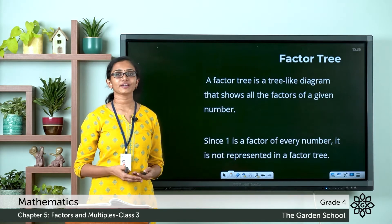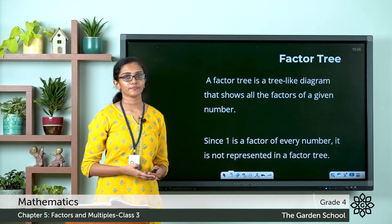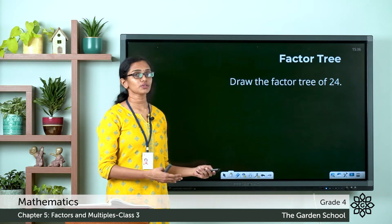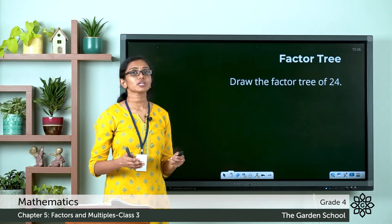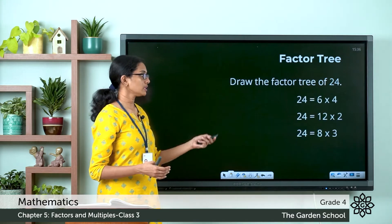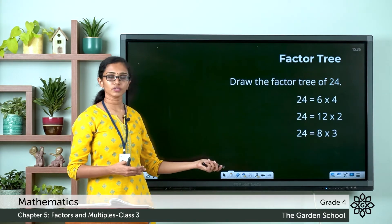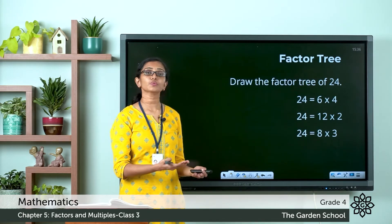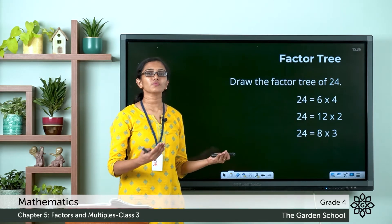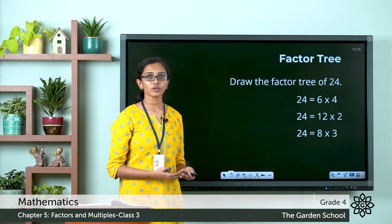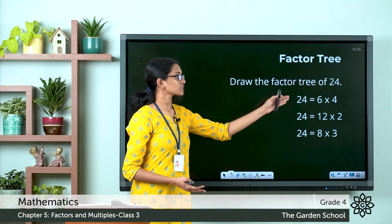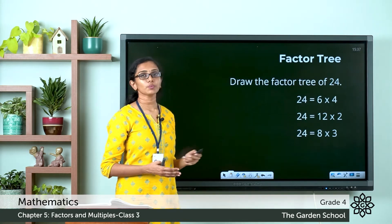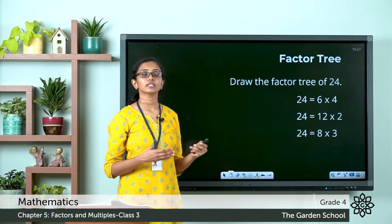Now let us learn how we can draw the factor tree of a given number. Draw the factor tree of 24. To draw the factor tree we need to know the factors of the given number. 24 can be 6 into 4, 24 can be 12 into 2, 24 can be 8 into 3, and 24 can also be 1 into 24. But since 1 is a factor for all numbers we do not need to represent it here. So we are going to consider only the factors 6, 4, 12, 2, 8, and 3.